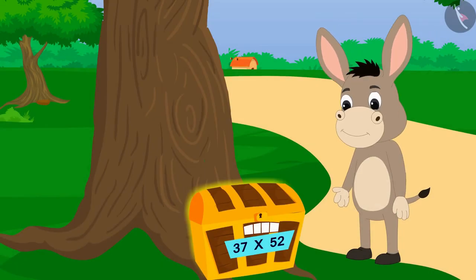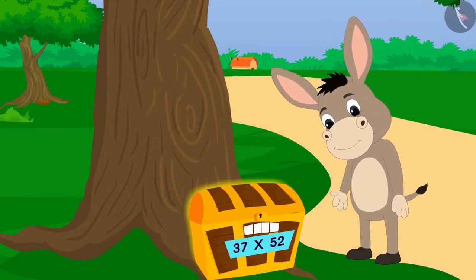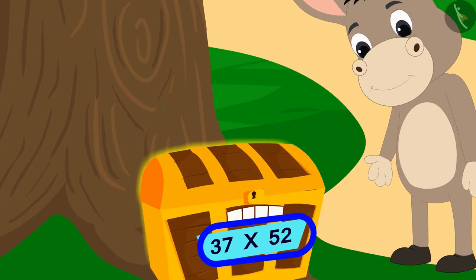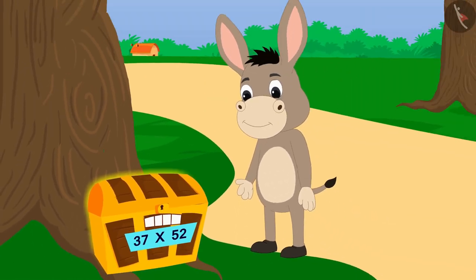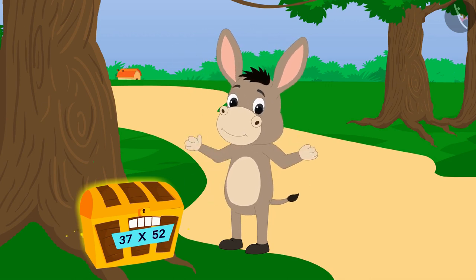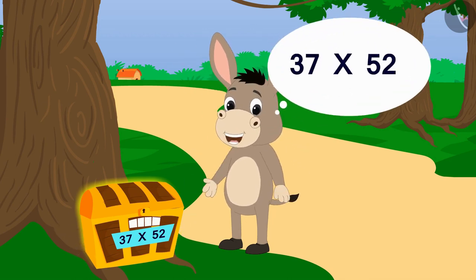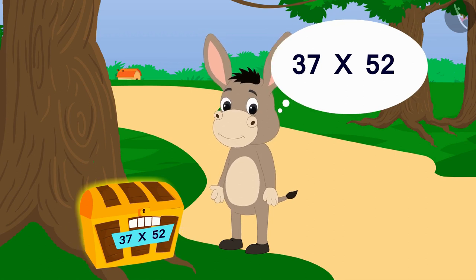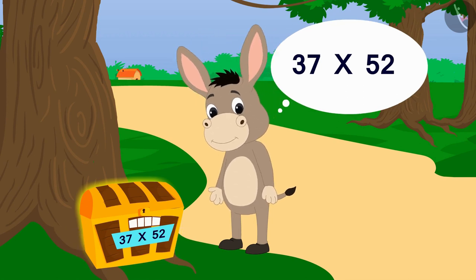Bhola noticed that this multiplication was written under the lock. Well, now I understand the code to open this lock could be 37 times 52. Bhola thought excitedly.